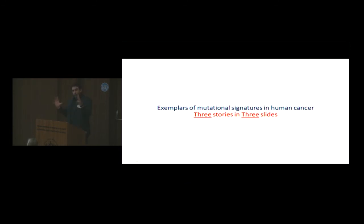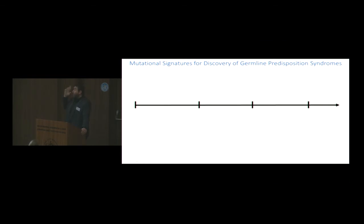For four out of the 11 double-base substitution signatures, we were not able to assign etiologies. This was my high-level overview of the different mutational signatures over about 25,000 cancer genomes. But I want to tell you three stories. Each story is a single slide. These are three stories that were published within the last year, year and a half. The first thing I'm going to tell you is how one can use mutational signatures for looking and discovering potentially novel germline predisposition syndromes.